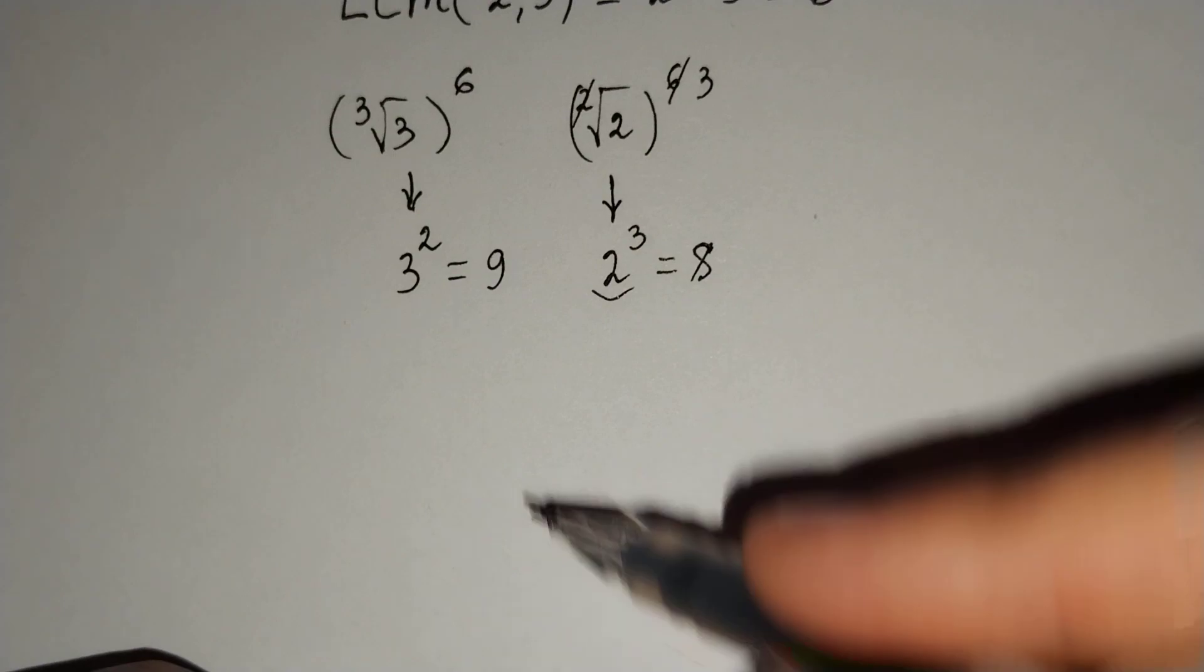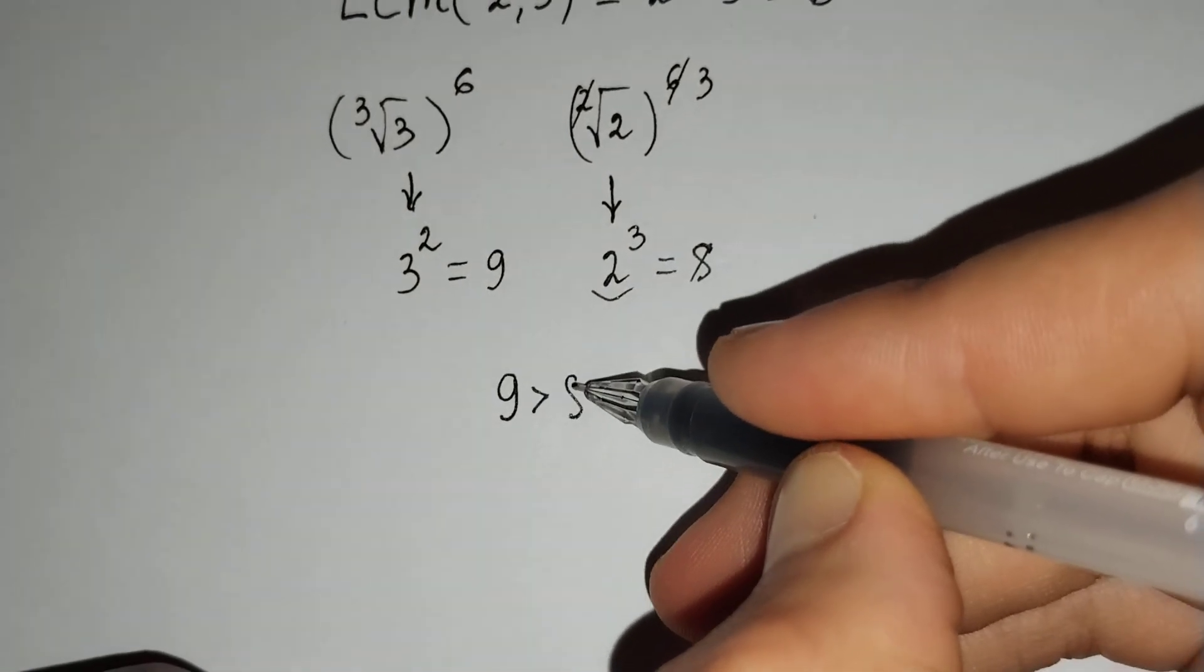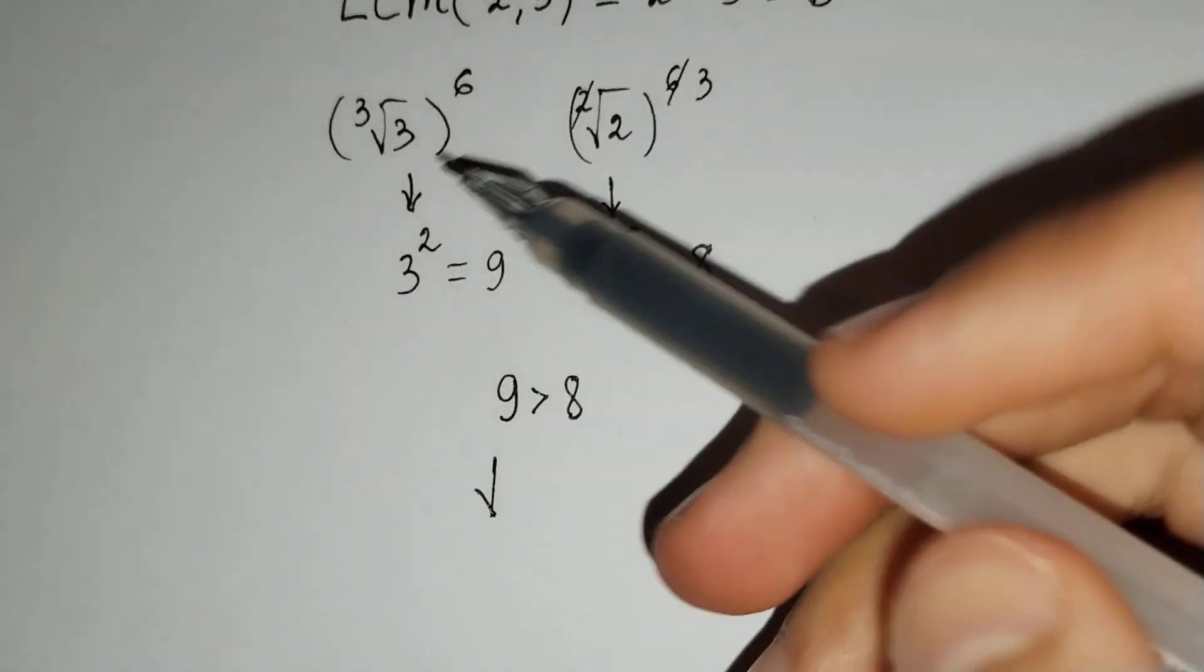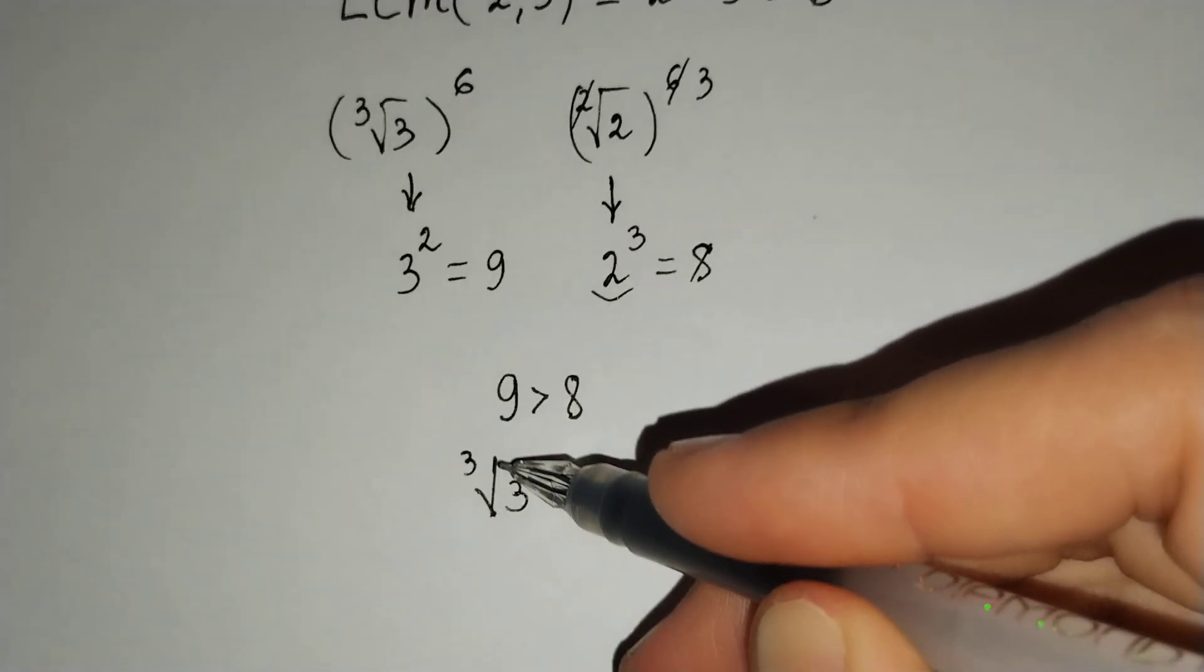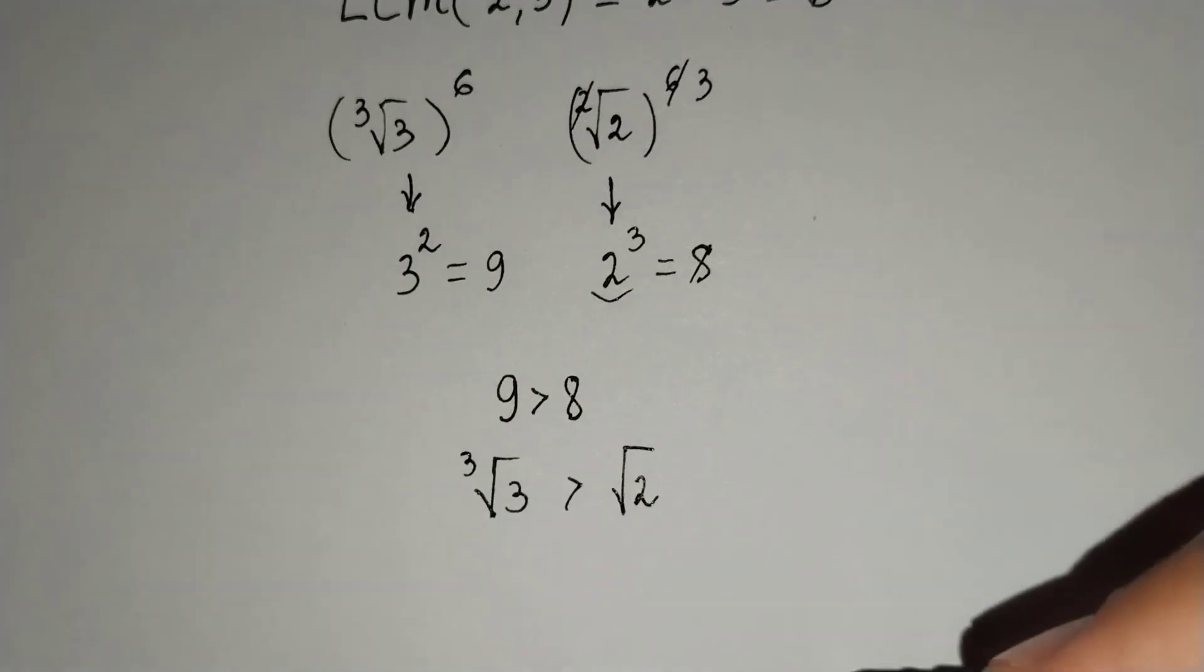You know that 9 is bigger than 8. That's why the cube root of 3 is bigger than the square root of 2.